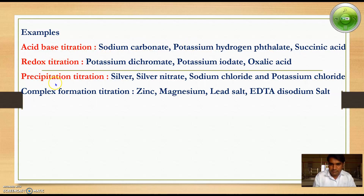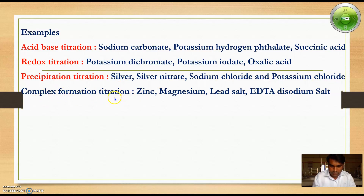For precipitation titration, silver nitrate, sodium chloride, and potassium chloride are generally used as primary standards. For complex formation titration, zinc, magnesium, lead salts, EDTA, and disodium salt are generally used as primary standard substances.